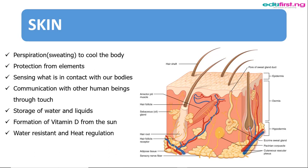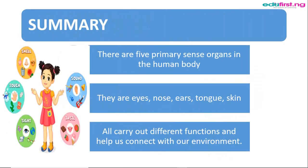As a summary of what we have learned today: the five sense organs are the nose, the eyes, the ears, the tongue, and the skin. Each of these sense organs carries out different functions and helps us connect with our environment.